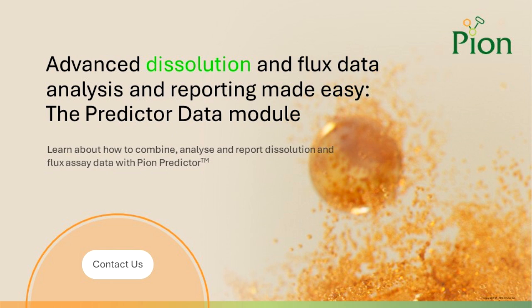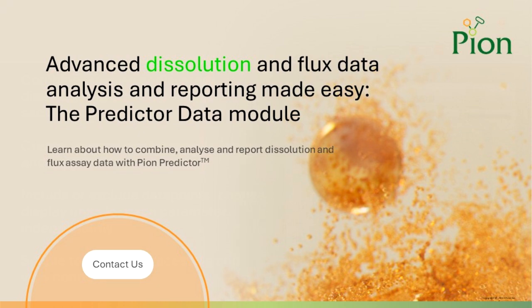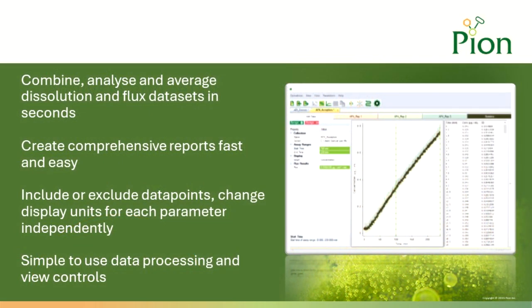The Predictor data module is the core module of Predictor software, which makes data handling, curve fitting, parameter calculation, and result reporting fast and easy. In the Predictor data module, up to 16 replicate concentration versus time profiles can be imported from AU Pro software and managed as one data set.